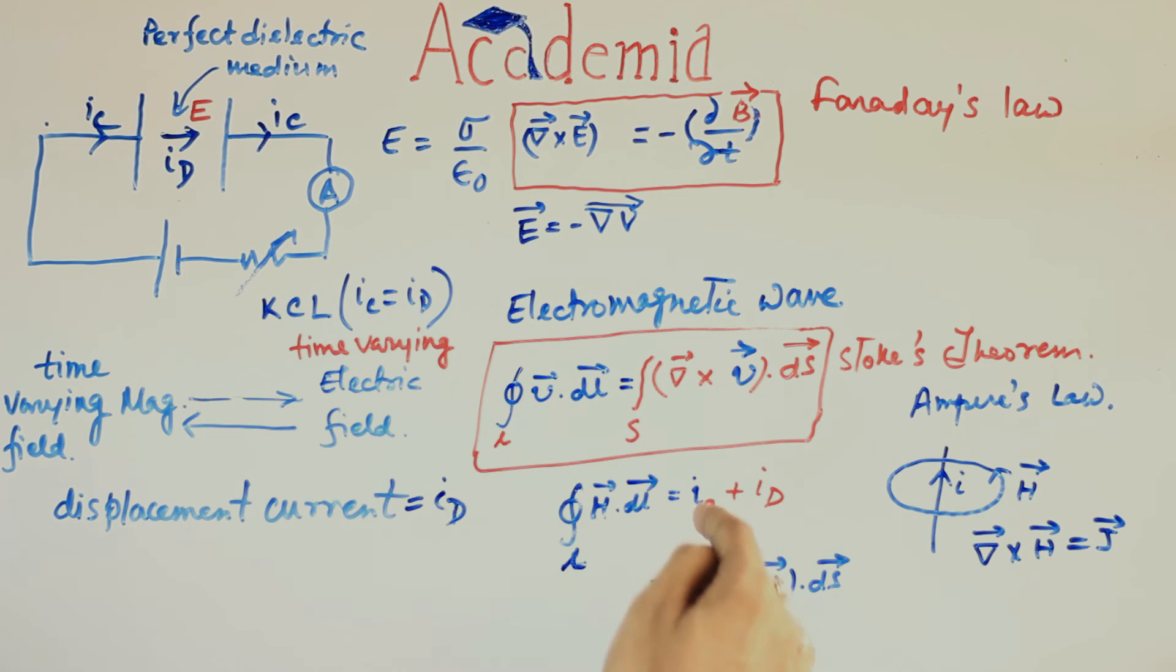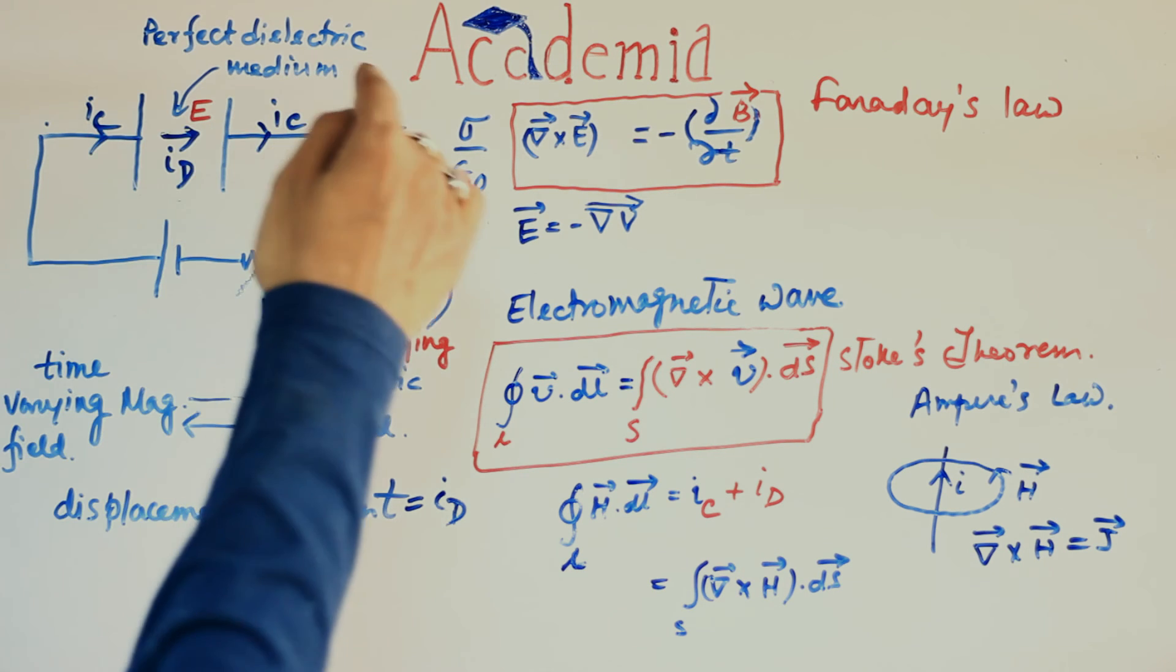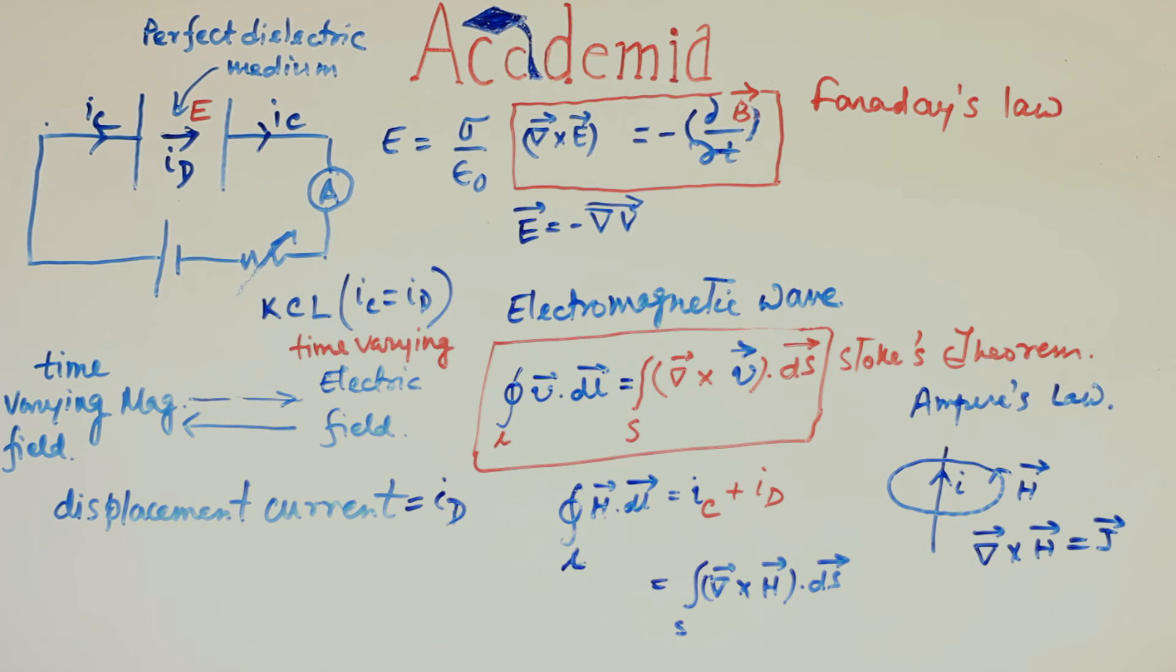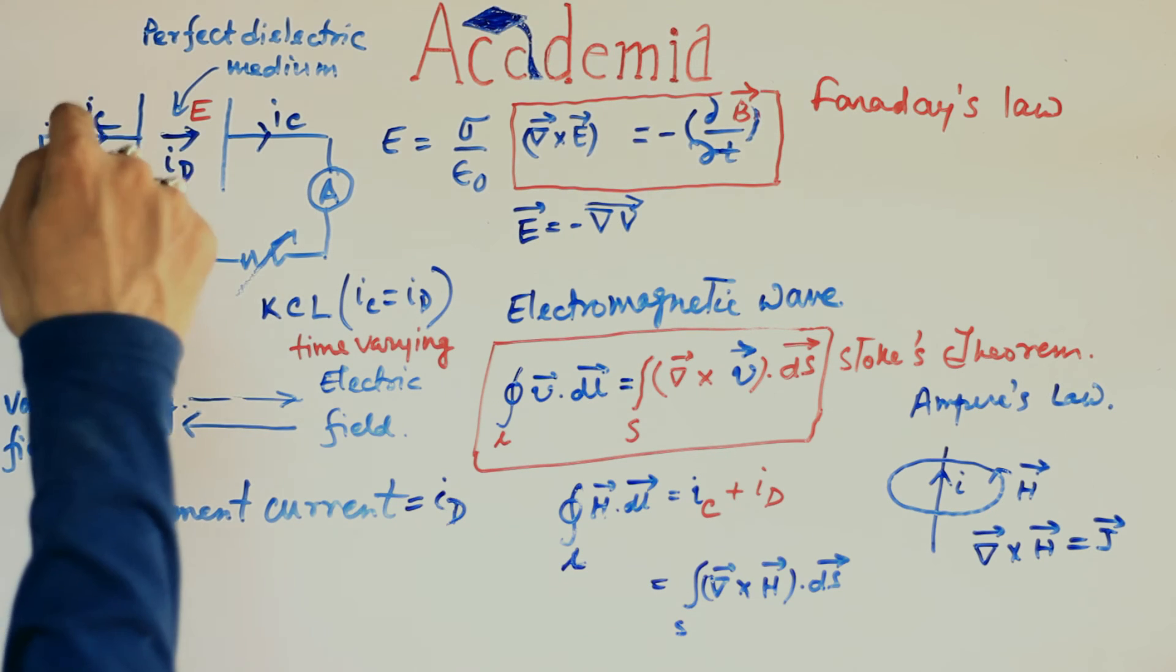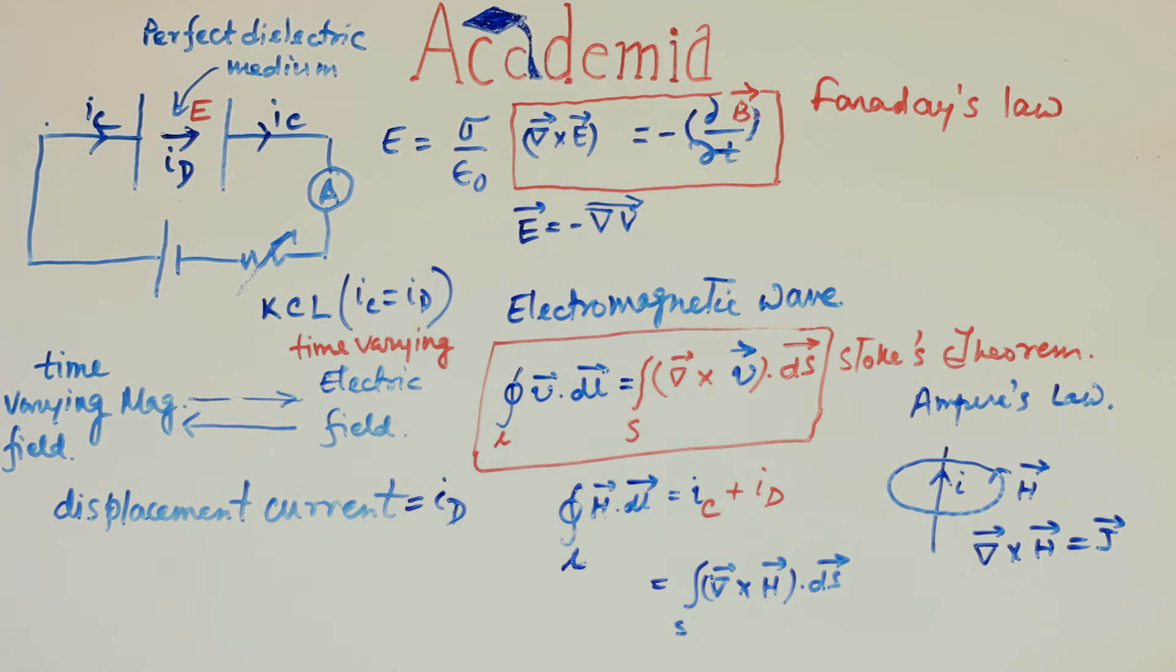So, the sum IC plus ID always has the same value, the constant value, along the entire path. Thus, preserving the property of continuity of current along any closed path. Though, individually, neither IC nor ID is continuous.